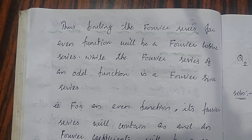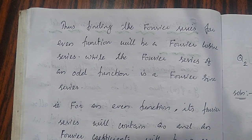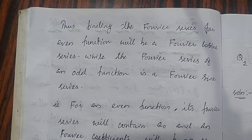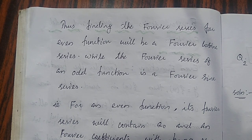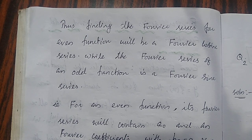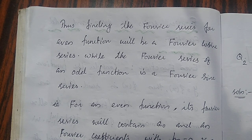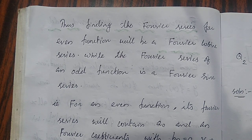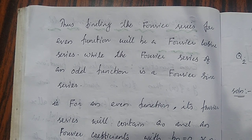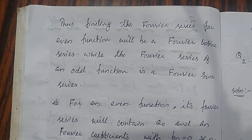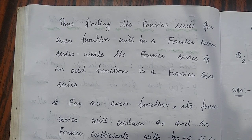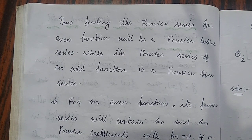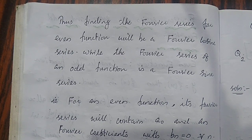Thus, finding the Fourier series for an even function gives a Fourier cosine series, and the Fourier series of an odd function is a Fourier sine series, because a₀ and aₙ are both 0 — only the sine term remains. To repeat: for an even function, the Fourier series contains a₀ and aₙ coefficients with bₙ equal to 0. But in the Fourier expansion of an odd function, a₀ and aₙ are 0, and only bₙ is non-zero.